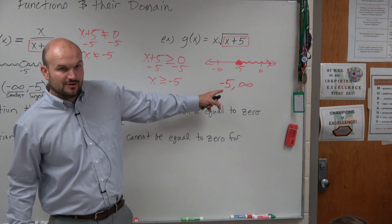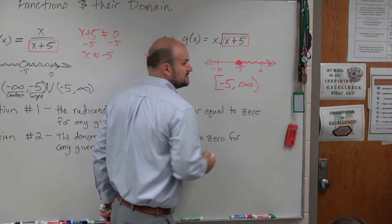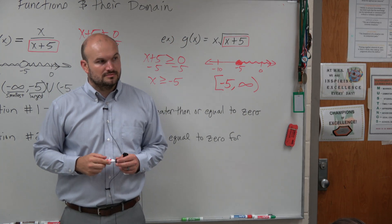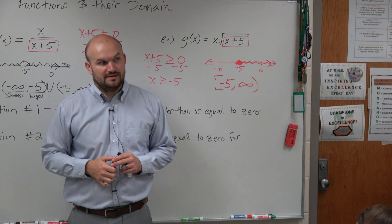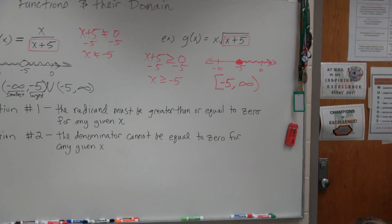Is negative 5 included or excluded? Included. So we use brackets. Infinity is never included, so it's always parentheses. That's the difference. Included is always in brackets.